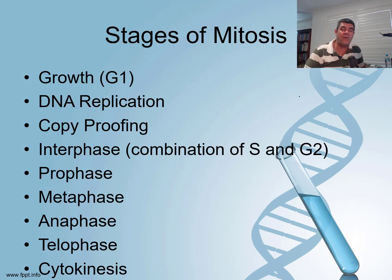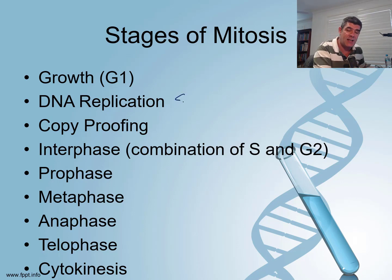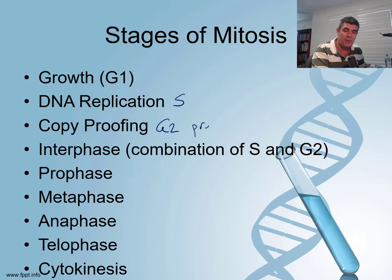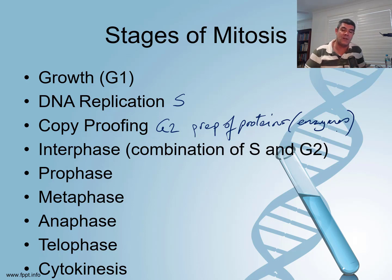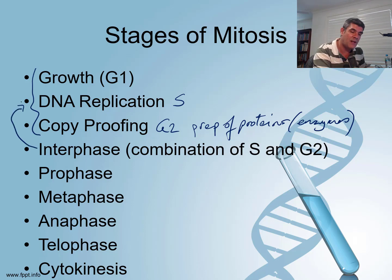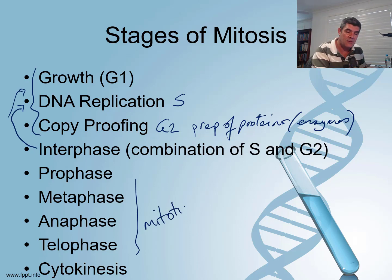Here's a summary of what's going on. The G1 stage is the growth and normal functioning stage, then DNA replication in the S stage, followed by the G2 stage involving proofing of the code and preparation of proteins — specifically enzymes involved in the subsequent processes. Interphase covers all of this, and then we get into the mitotic division processes.